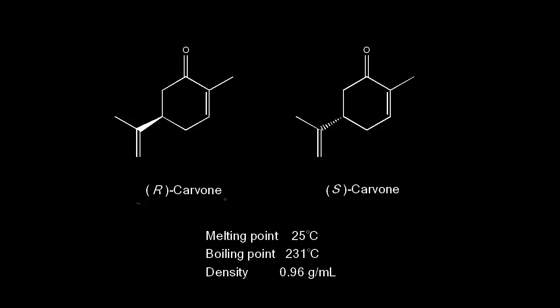Here we have a pair of enantiomers. On the left we have R-carvone, and on the right we have S-carvone. Both of these compounds have the same melting point, the same boiling point, and the same density.